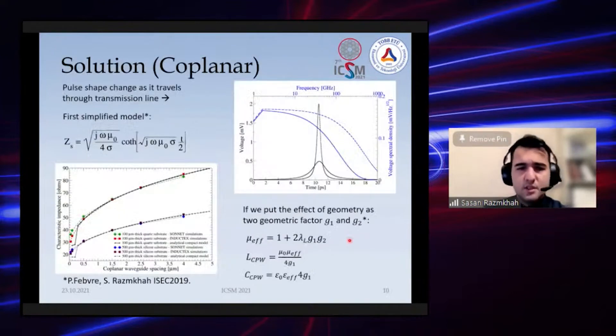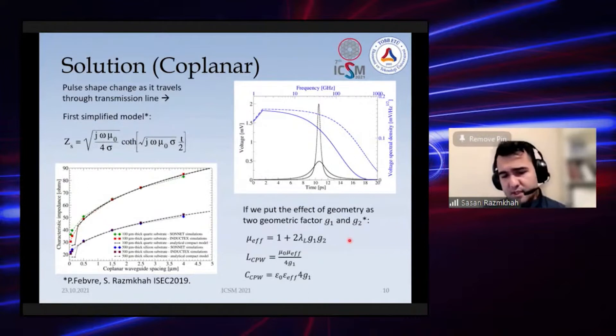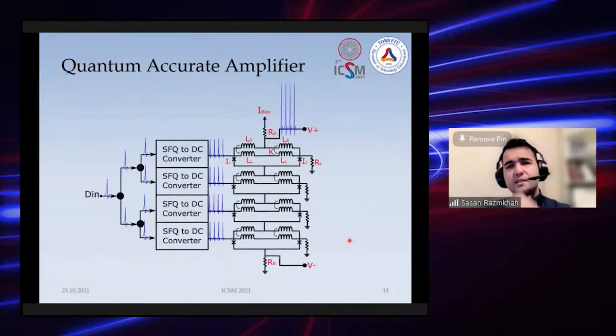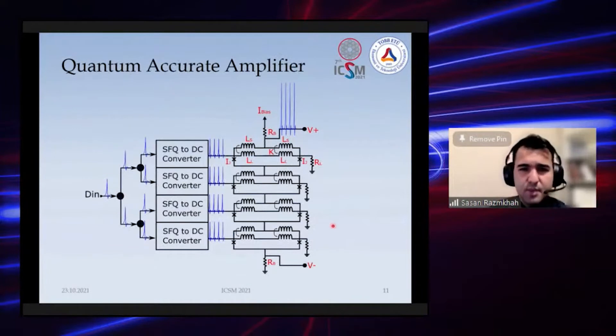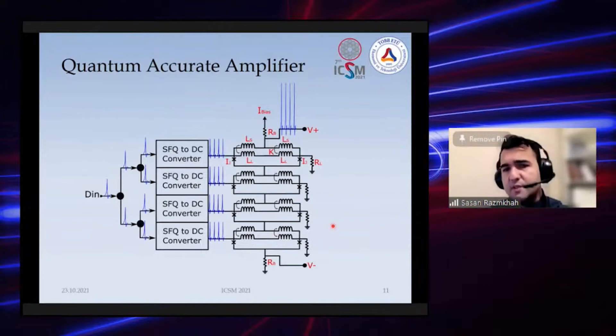These are the previous works we've done on strip lines and coplanar lines for connections between superconductor circuits. After that we needed to design an amplifier to amplify this pulse and correct the shape of the pulses when we send them for long distances or when we want to read out and integrate this chip with CMOS chips.